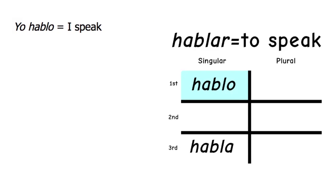Hablo is part of the conjugation of the verb hablar. Notice in the verb chart that hablo is placed in the upper left corner because it is the first person singular — the person speaking.